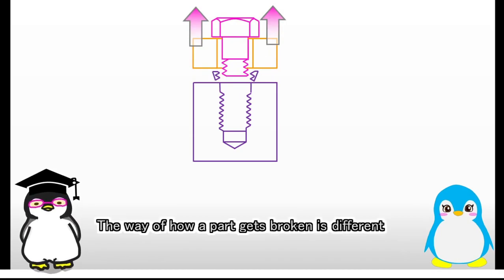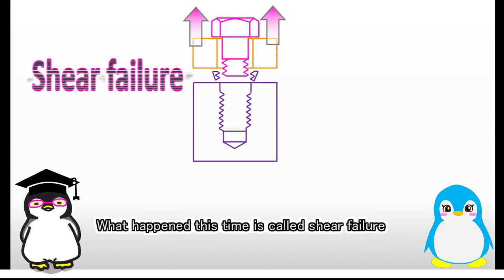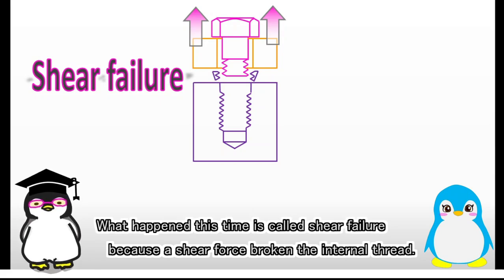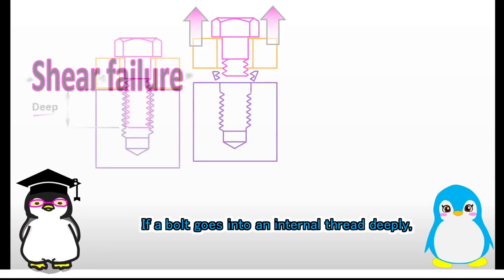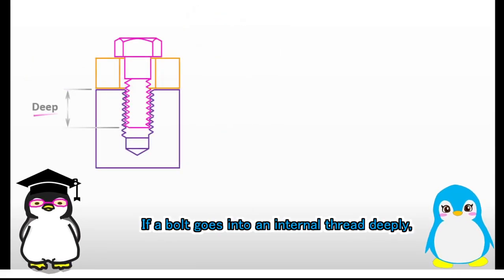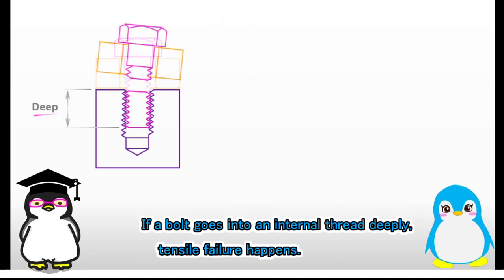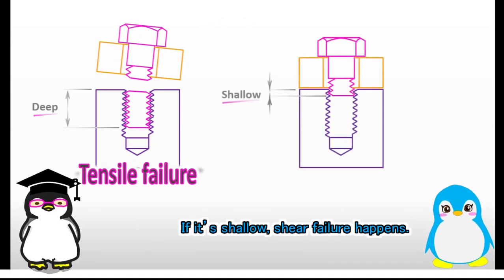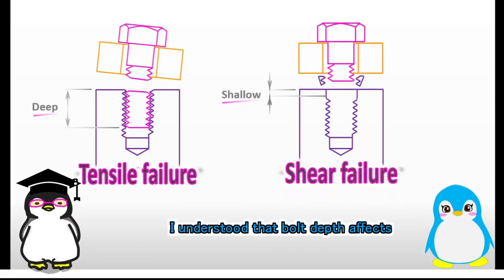The way of how a part gets broken is different from the way we saw a while ago. What happened this time is called shear failure, because a shear force broke the internal thread. If a bolt goes into an internal thread deeply, tensile failure happens. If it's shallow, shear failure happens.